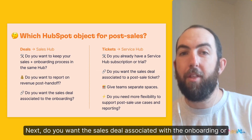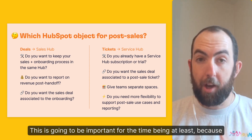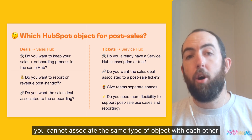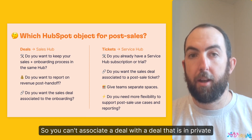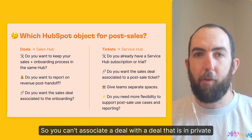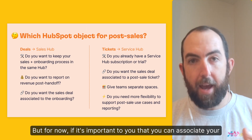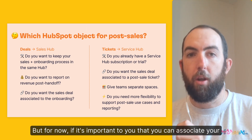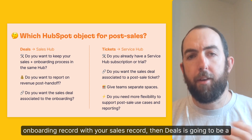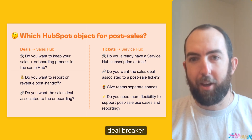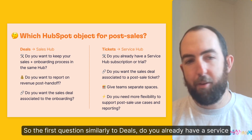Next, do you want the sales deal associated with the onboarding or implementation deal? This is important for the time being, because you cannot associate the same type of object with each other — you can't associate a deal with a deal. That is in private beta as of recording this video, so it may change in the future. But for now, if it's important that you can associate your onboarding record with your sales record, then deals is going to be a deal breaker.